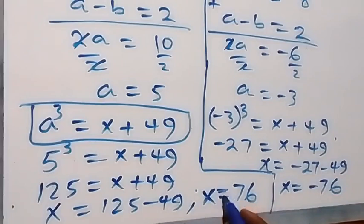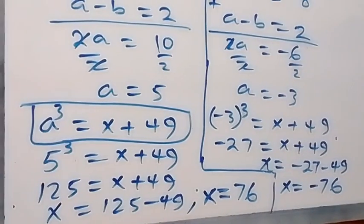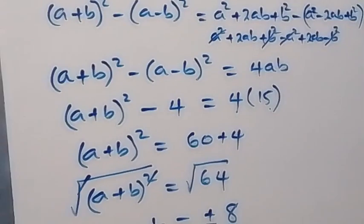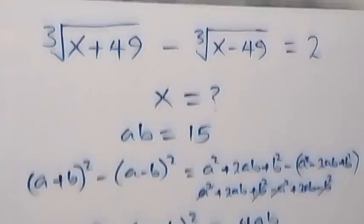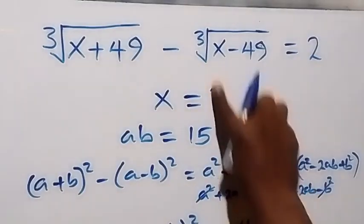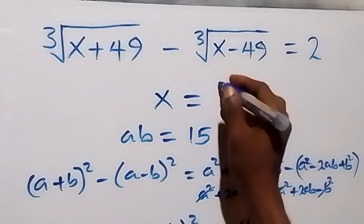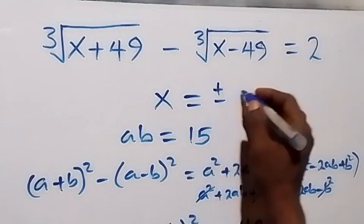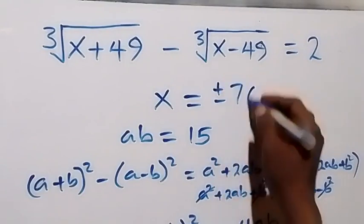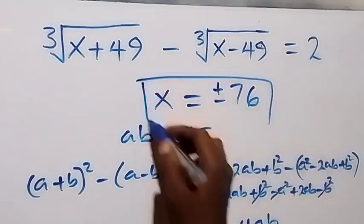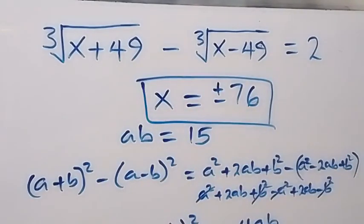So we have two values of X: X equals 76 and X equals minus 76. Both values satisfy the given problem when we check. Therefore, X equals plus or minus 76. Thank you for watching — don't forget to subscribe to my channel and turn on the notification bell. See you next class.